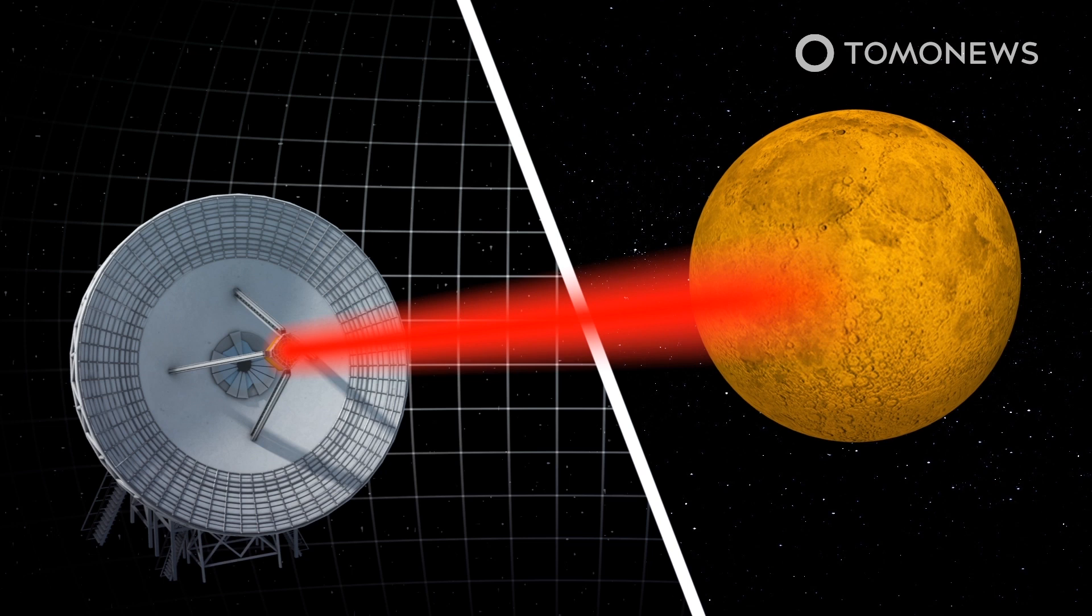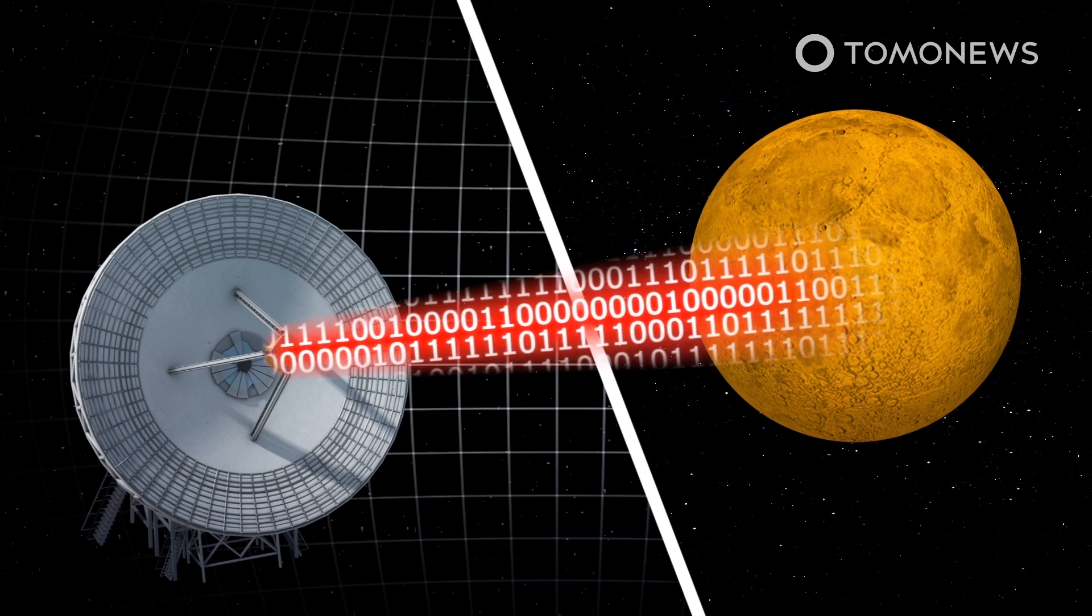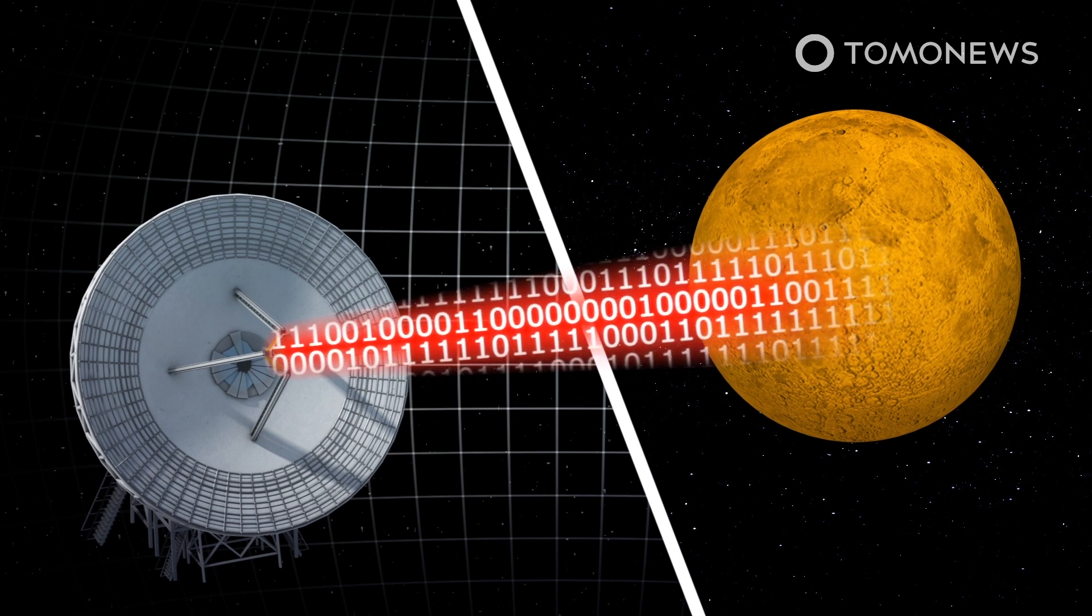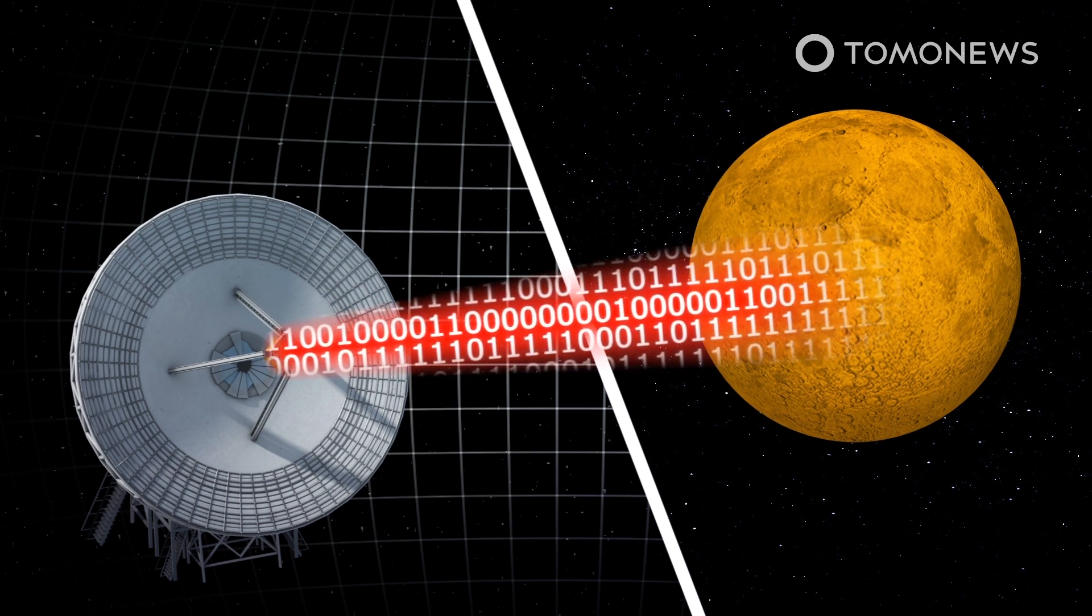According to Suzanne Dodd, director of the Interplanetary Network, which manages the Deep Space Network, lasers will be able to transmit roughly 10 times more data than radio antennas from Mars to Earth.